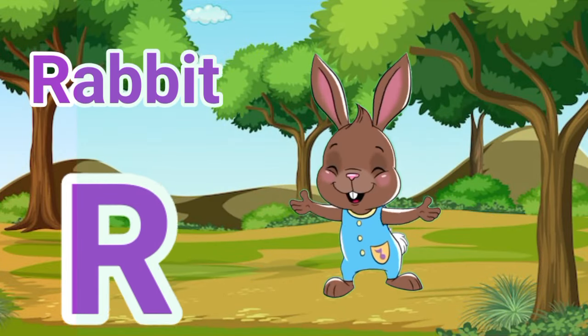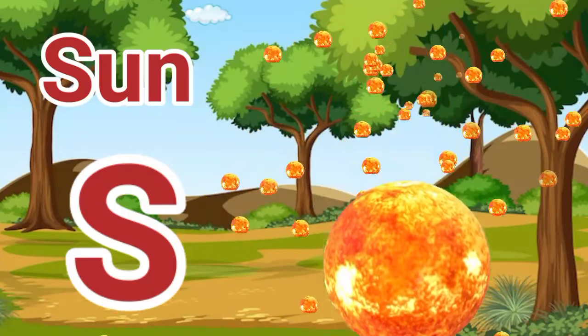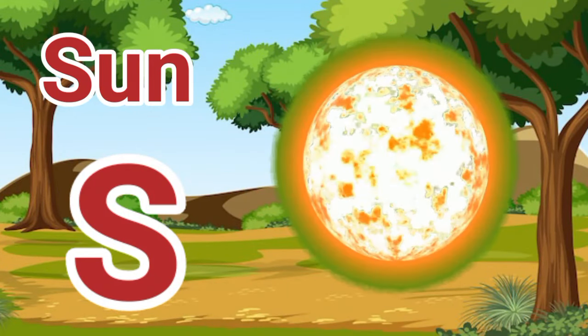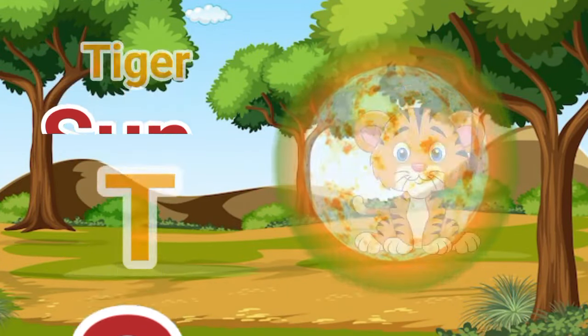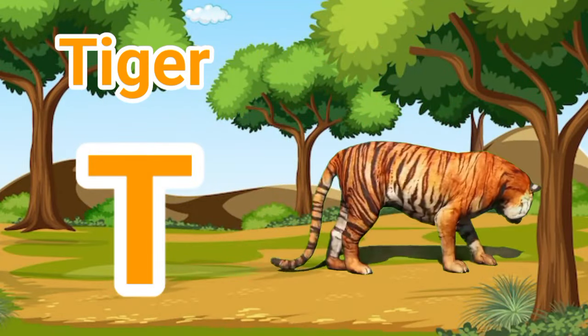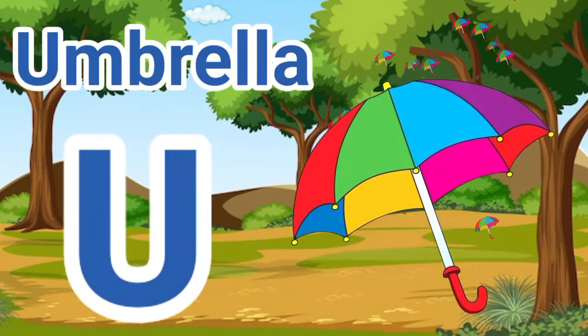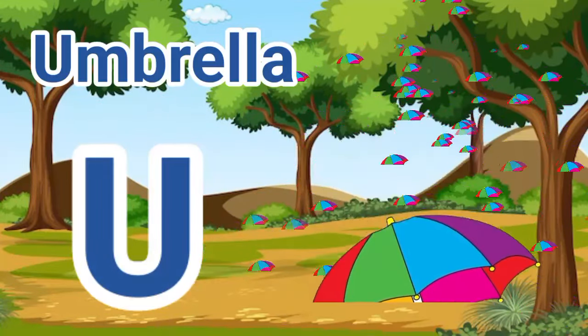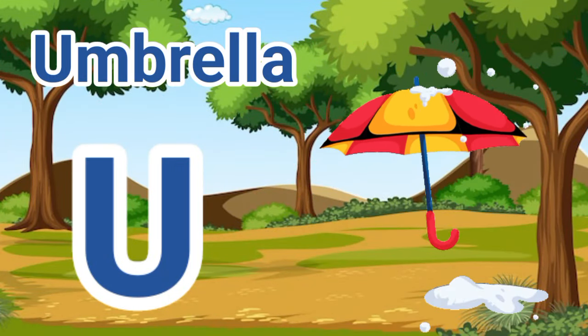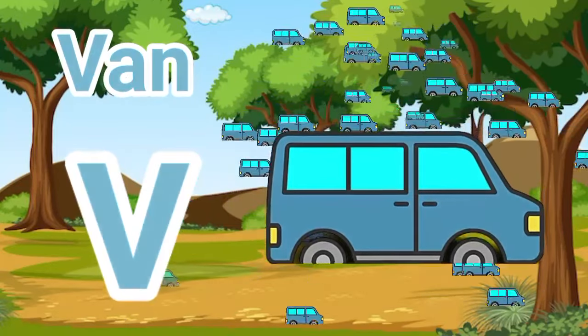R is for rabbit, r-r-r-rabbit. S is for sun, s-s-s-sun. T is for tiger, t-t-t-tiger. U is for umbrella, u-u-u-umbrella.